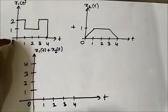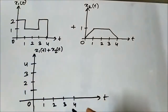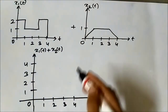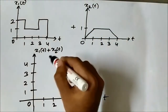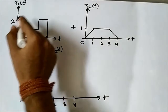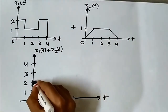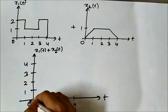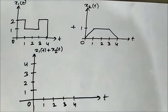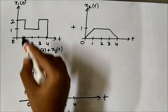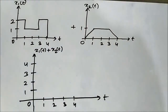Starting from t equals 0: for x1(t) the amplitude is 2, and at t equals 0 the amplitude of x2(t) is 0. So when we add 2 plus 0 we get 2 at t equals 0 — that is the starting point of the resultant signal.